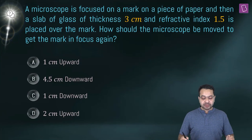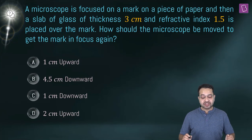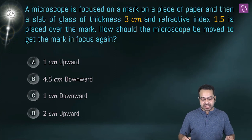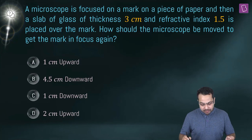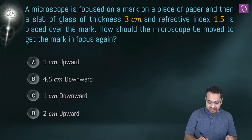A microscope is focused on a mark on a piece of paper, and then a slab of glass of thickness 3 cm and refractive index 1.5 is placed over the mark. How should the microscope be moved to get the mark in focus again?